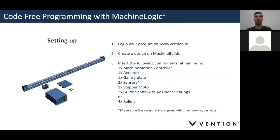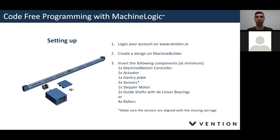You'll also need a gantry plate (for timing belt or ball screw), two sensors — I'll explain why two are super important — a stepper motor, and a guide shaft with bearings or rollers. Let's switch gears and go directly into Machine Builder. Once you've created a new design, you'll see the Machine Builder interface with the parts browser on your left. Under the category Partner Models, you can open it up and see the Yaskawa and the three UR models. Just take one — I'll use the UR3 — right-click and edit the robot, using joints or the green ball to move it into position.